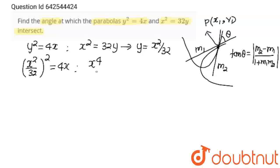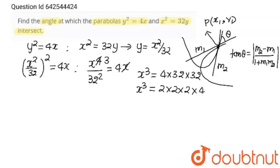We'll get x⁴/(32)²=4x. Both sides, x will get cancelled out and this will become x³. So x³=4×32×32. Now I'm going to write this in simple form that is 2×2×32×2×16 and 16×4×4 and 32×4×16 and 16×4×4. This will become x³=2³×4³×4².